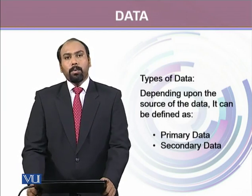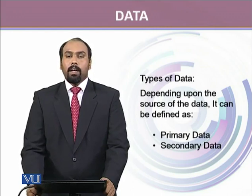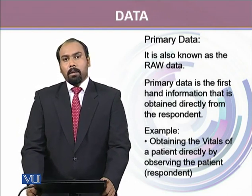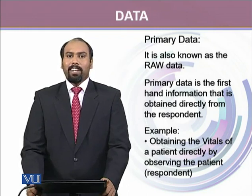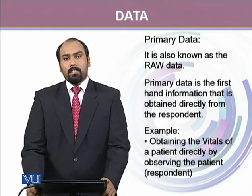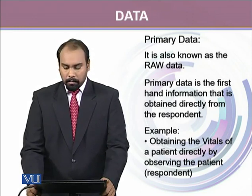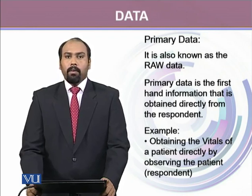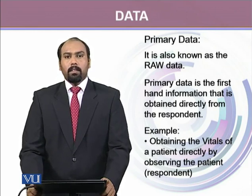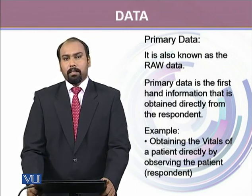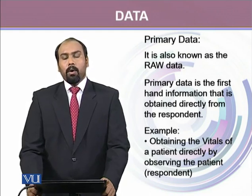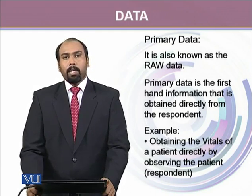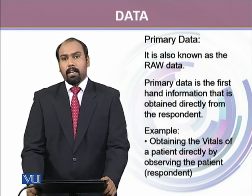There are two different types of data depending upon how we collect them. The first type is known as primary data. Primary data is called the raw data — this is the first-hand information obtained for our study. For example, when a patient visits a hospital and a doctor or nurse takes the vitals directly from the patient, that is called primary data, which is raw, first-hand information.